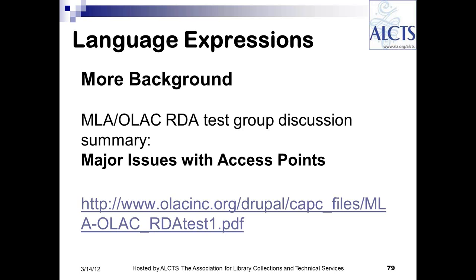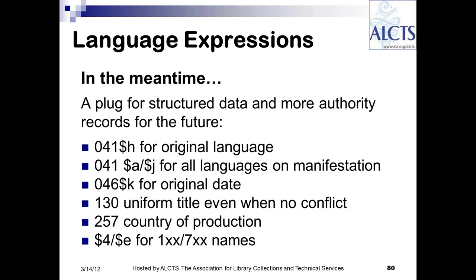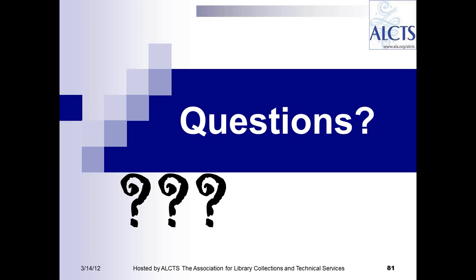Here is a link to a document with lots more discussion on access points for expressions. Finally, a plug for something I personally believe is very important: we should be recording more information that users want as data that a computer can identify and manipulate. Here are some examples of relevant data elements that can be recorded in MARC BIBS for moving images. It would also be beneficial in the long run to have more authority records for moving images, so we don't have to keep redundantly recording the same data. Does anyone have any questions? I hope I haven't totally overwhelmed you.